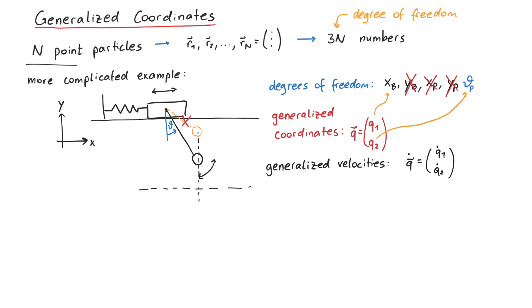Once we know generalized coordinates and generalized velocities of a system, the generalized accelerations are uniquely defined. The relations between the generalized coordinates, velocities and accelerations are called the equations of motion.